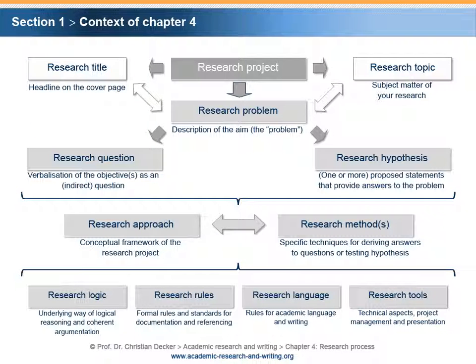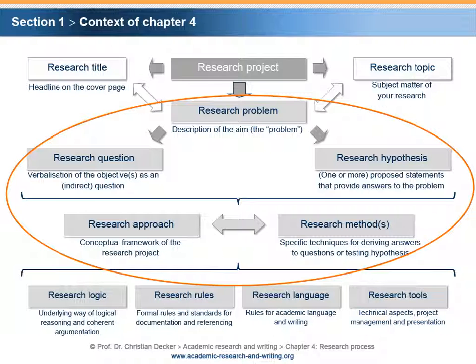In this chapter, we address the research process. Different aspects of academic research are affected: the research problem, the research question, the research hypothesis, the research approach, and the research methods. This chapter combines different aspects of academic research.